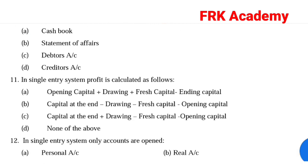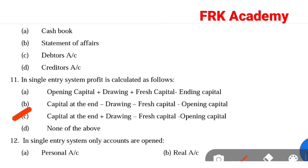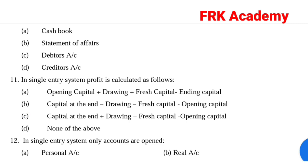Question 18: In a single entry system, profit is calculated as follows. The formula is: closing capital at the end, plus drawings, minus fresh capital, minus opening capital. Answer: Option C, closing capital at the end plus drawings minus fresh capital minus opening capital.